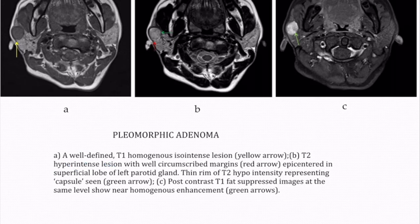Axial MRI sequences showed a well-defined T1 homogenous iso-intense lesion with a T2 hypo-intense lesion in the superficial lobe of the left parotid gland. A thin rim of T2 hypo-intensity representing the capsule was seen. Post-contrast T1 fat-sat images showed near homogenous enhancement. Based on these imaging findings, a diagnosis of pleomorphic adenoma was given, which was confirmed on pathology.